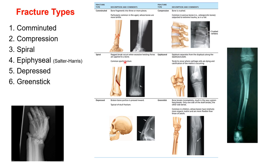An epiphyseal fracture — also known as Salter-Harris — is very painful. The bone is slightly weaker at the epiphyseal plate because that's an area of active bone growth. This most commonly occurs in pre- or early adolescence. It's essentially a swiveling fracture at the epiphyseal plate.